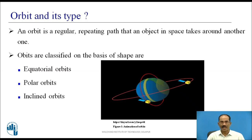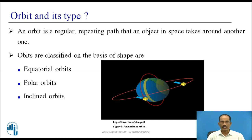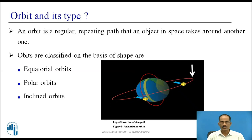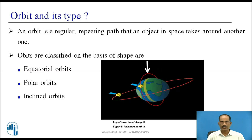Orbits can be classified depending on the shape and position. First we shall see the classification of orbit on the basis of shape. First one is equatorial orbits — see the diagram — polar orbits, and inclined orbits, which is not shown in the diagram.